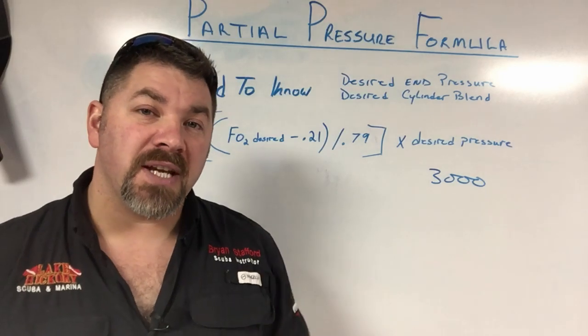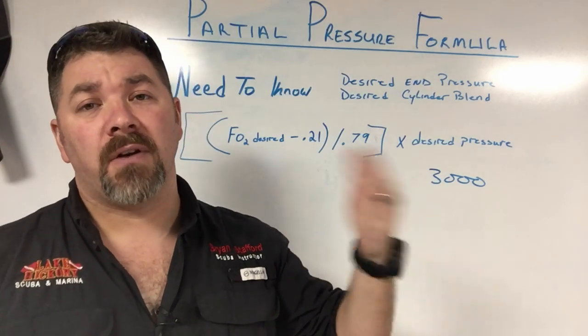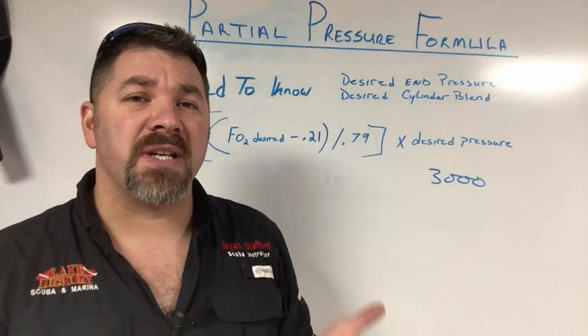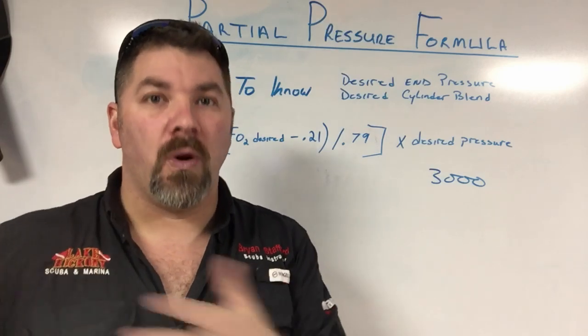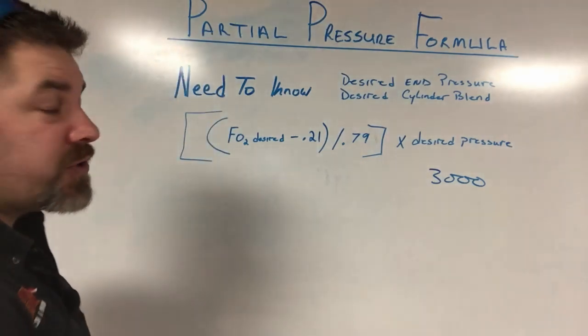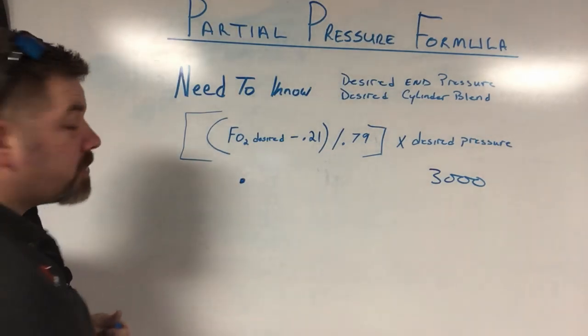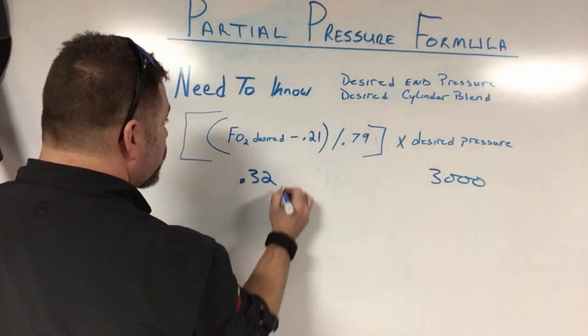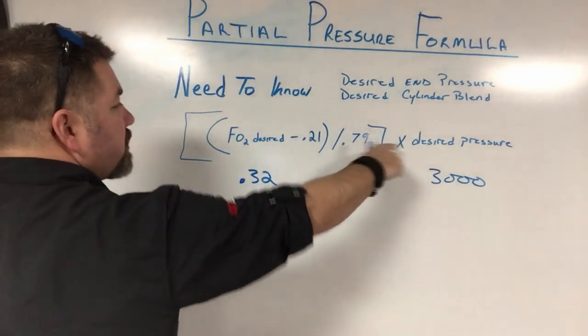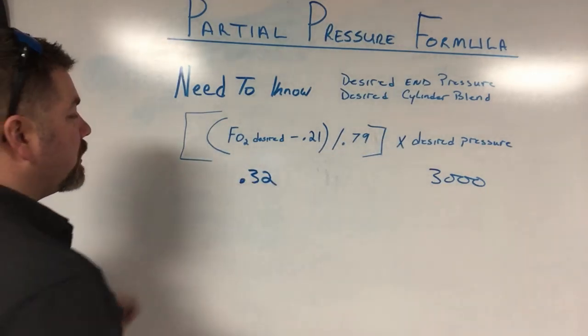Now remember, when we're doing the math, we can't really use the percentage sign. We've got to convert it over to a decimal. So when I say percentage, I'm also meaning decimal. So if I'm going to use 32%, I'm going to take my desired partial pressure of O2, which would be 32%, and I'm going to just simply fill in the formula as well.